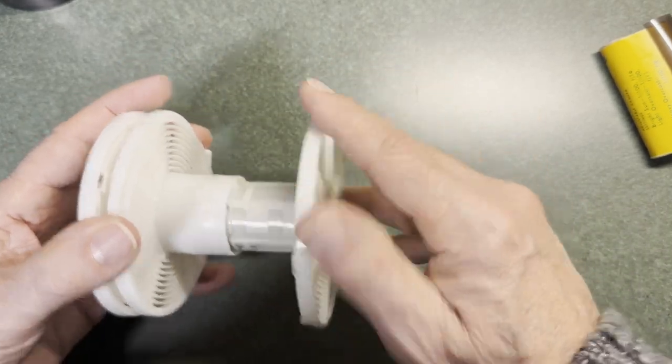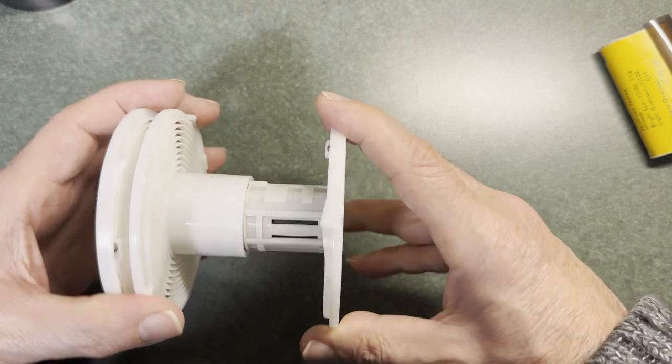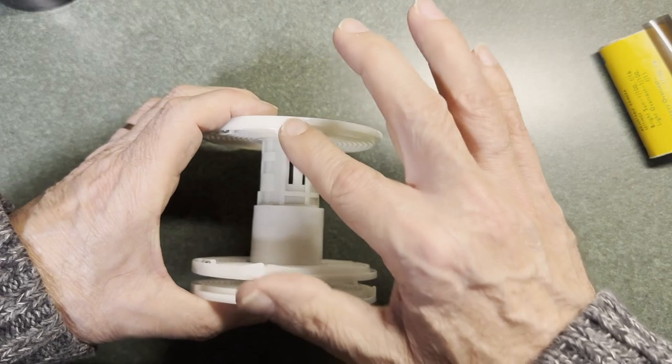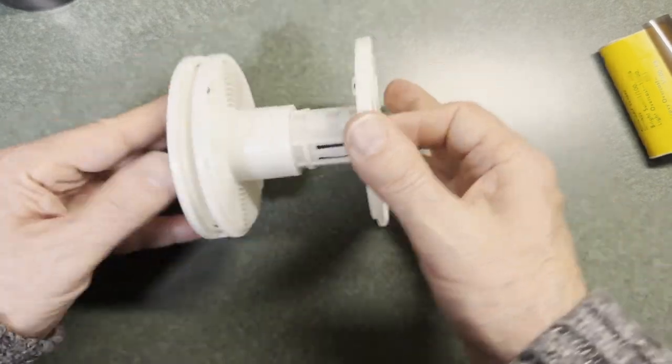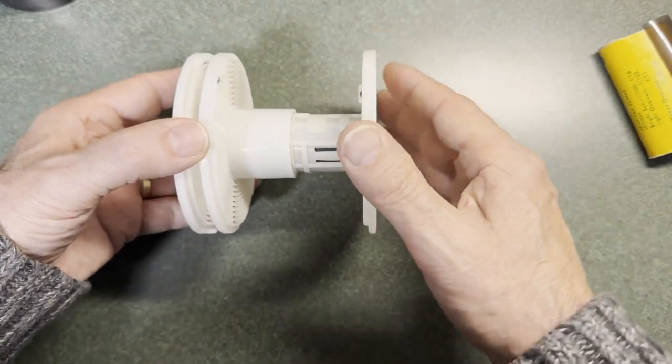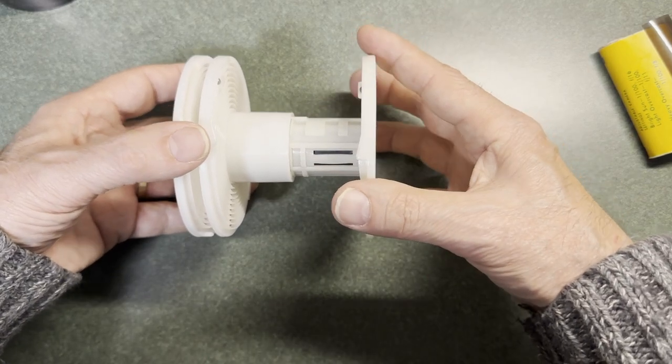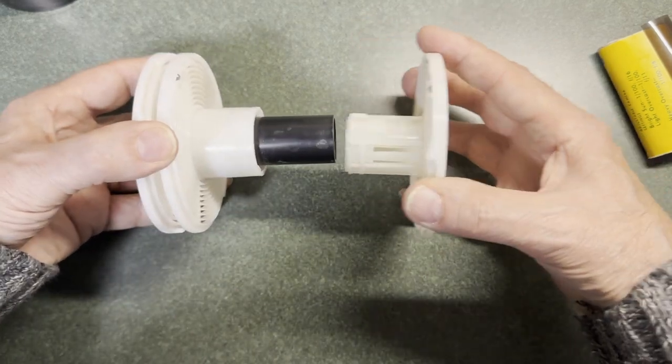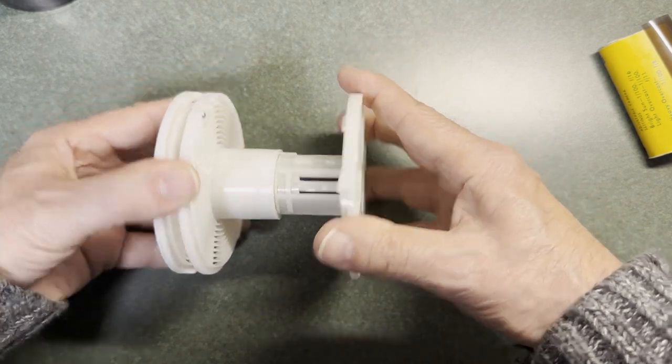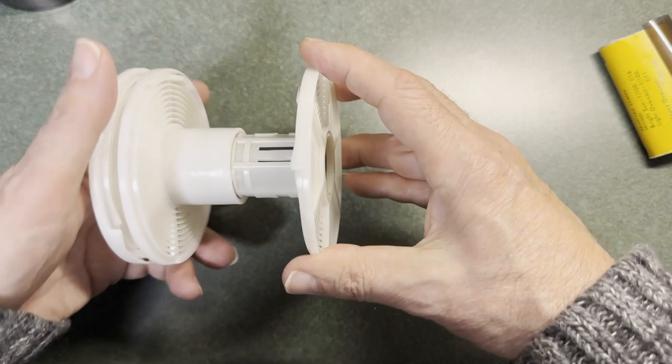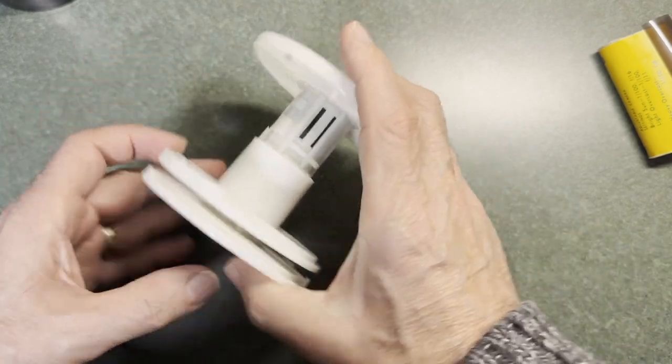Now when you do this, normally these are locked together so you can't separate them. In this case they're not locked; they will come apart. So as you're doing everything, you need to keep a little bit of downward tension to keep them latched together, but it's not too difficult.